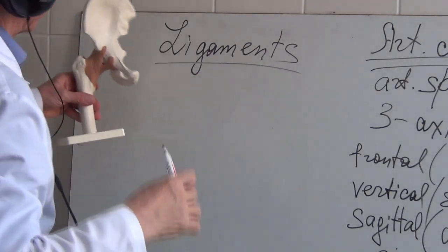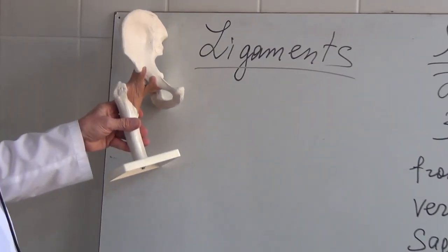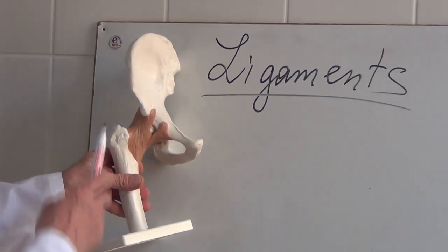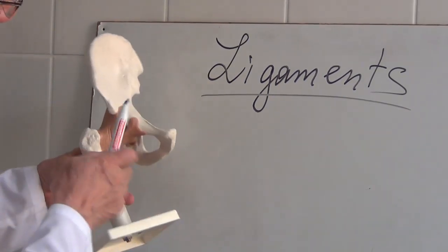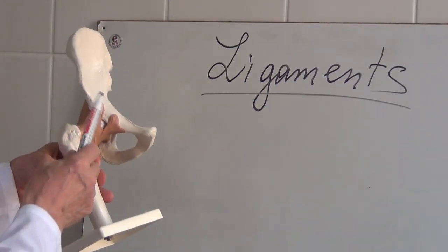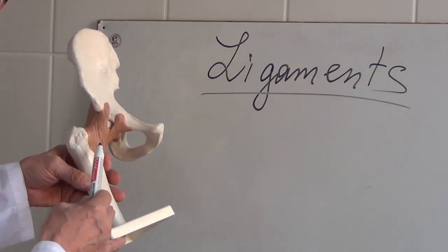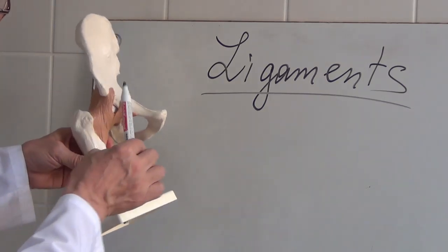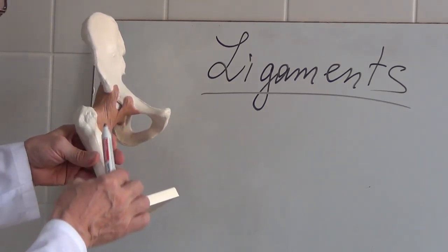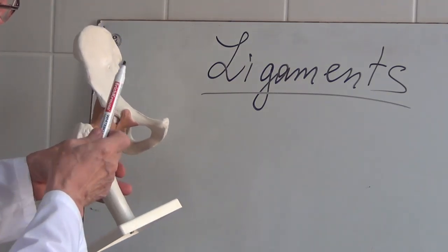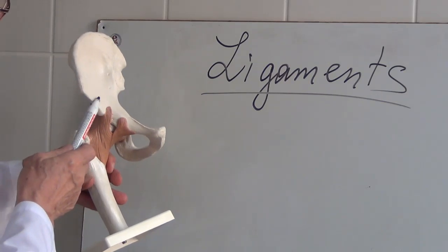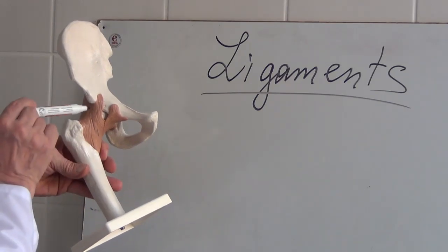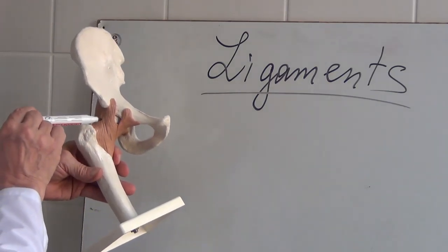I'd like to demonstrate you this artificial specimen of hip joint. And you can find here several very strong bands which reinforce this joint. First of all, is here the band which connects the iliac bone with the femur. So ligamentum iliofemorale. Here it is.